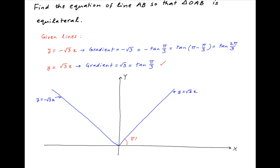We have obtained earlier that the line y equals root 3x makes an angle π/3 with the positive direction of the x-axis, and the line y equals minus root 3 times x makes an angle 2π/3 with the positive direction of the x-axis.